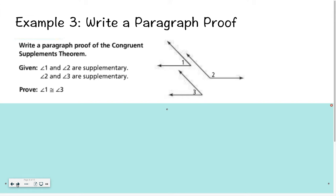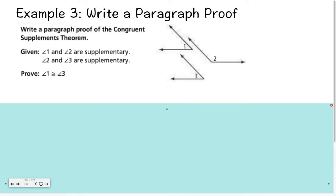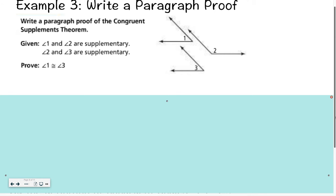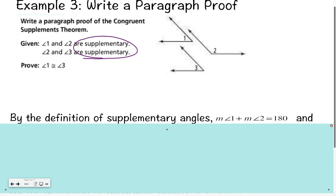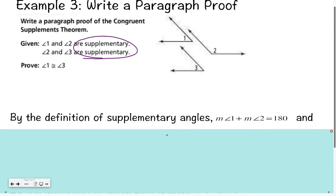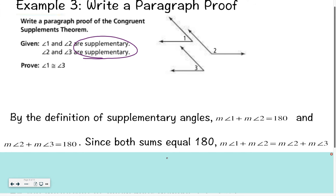Now let's talk about writing a paragraph proof. Paragraph proofs are basically the same thinking as a two-column proof, except you are going to use full sentences instead. The way that you start out a paragraph proof is still with the given, but we're not going to write 'given' and then list the information. You would say something using that information. So I would start by saying: by the definition of supplementary angles, the measure of angle 1 plus the measure of angle 2 equals 180, and the measure of angle 2 plus the measure of angle 3 also equals 180.